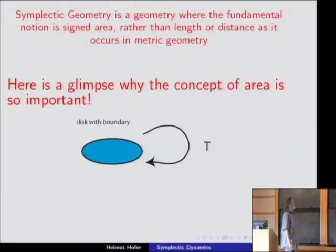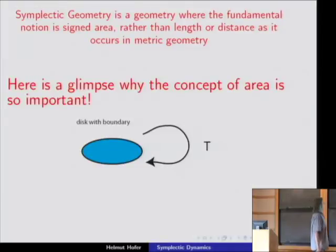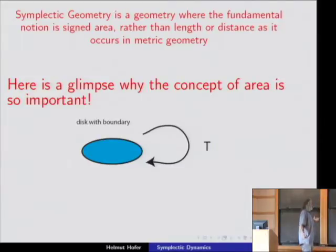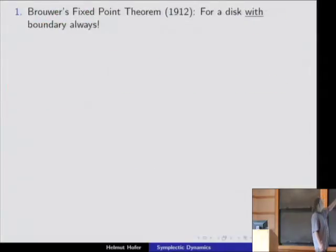Suppose you model a physical system. The points are the states of the system, and what happens after some time unit is described by a map — you take a state, feed it into the map, and get another state. From a topological point of view, if you ask whether there is a state which is fixed at all times, the answer is yes — that's Brouwer's fixed-point theorem.